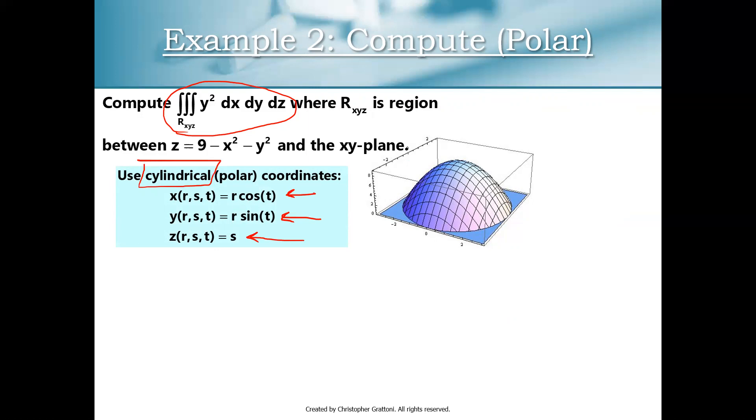We're going to say that z of rst is equal to s, but it's really going to represent the same idea, which is a change in depth, a change in z coordinate. And the reason this is called cylindrical, if I take r cosine t and r sine t and I draw a circle of radius r and then I drag that circle through a depth s, what do I get? When I drag a circle of radius r through a height s, I get a cylinder. So hence cylindrical coordinates.